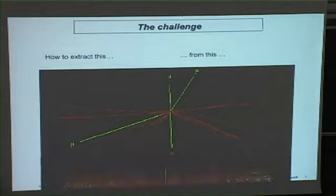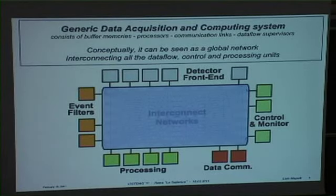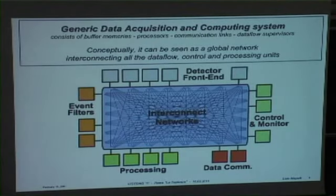Trigger and data acquisition are two concepts which you find in any experiment, from the very smallest to the very biggest. Trigger is the ability to tell when there is something interesting happening in your detector to make selections of event data.